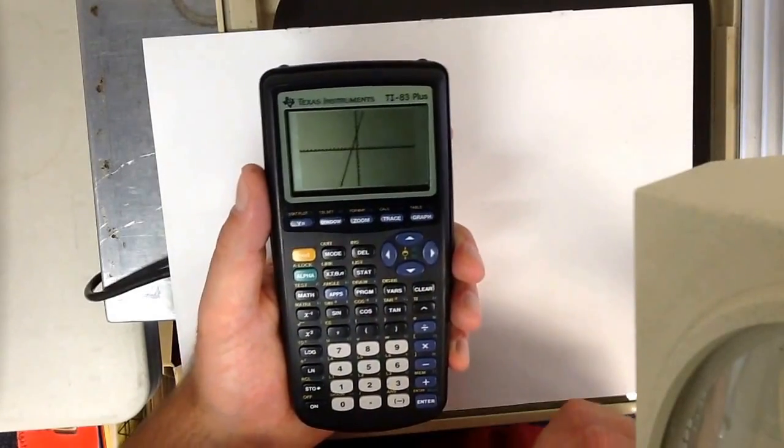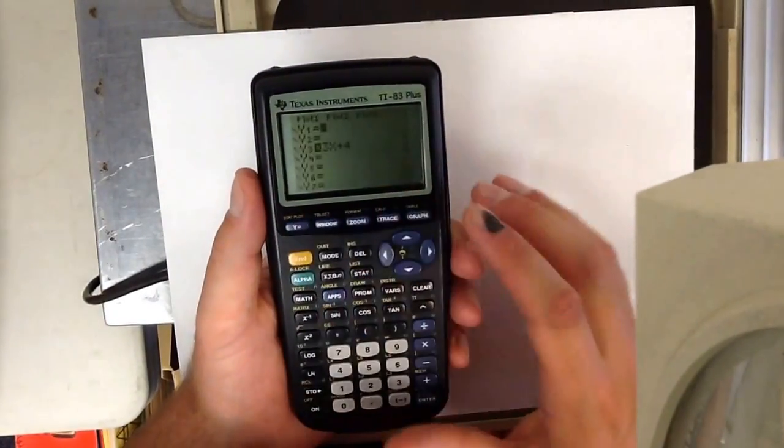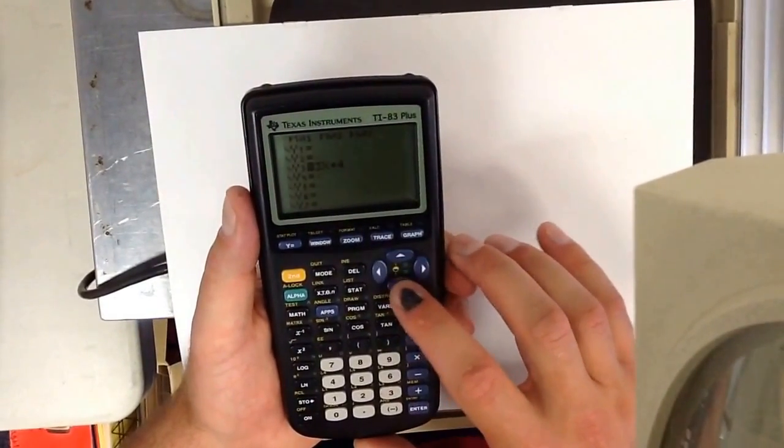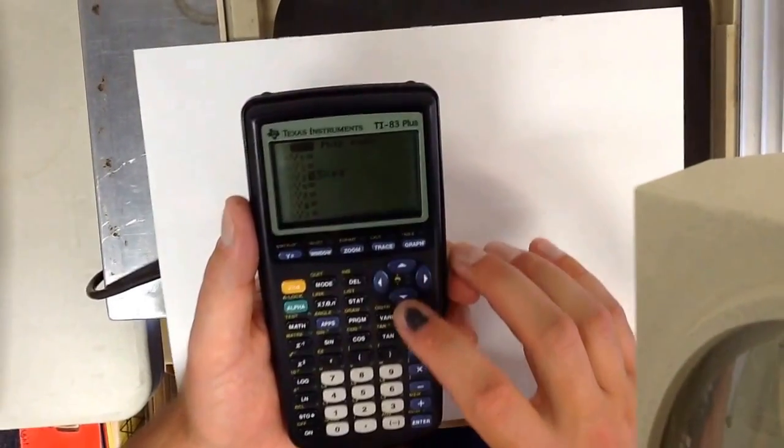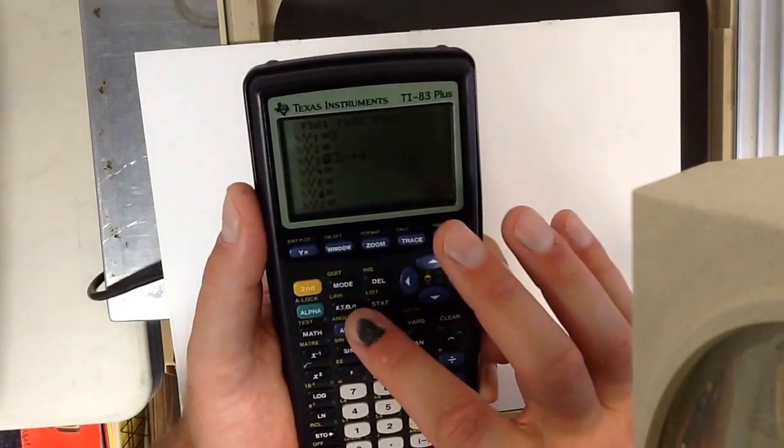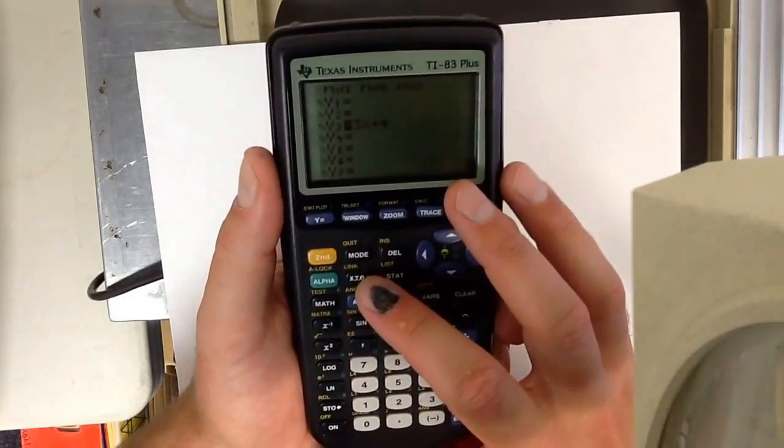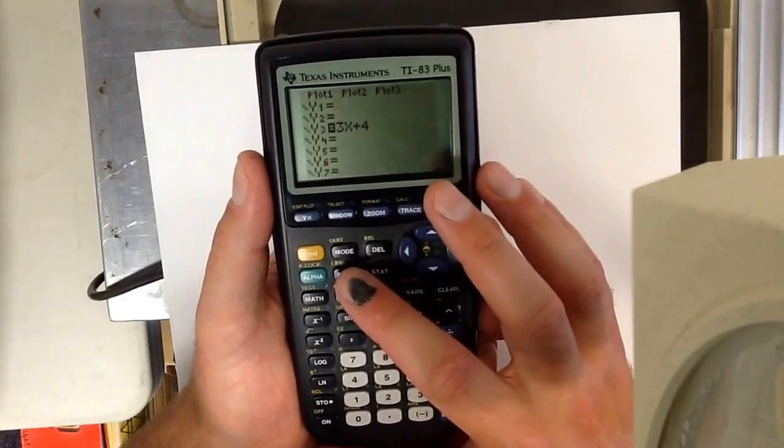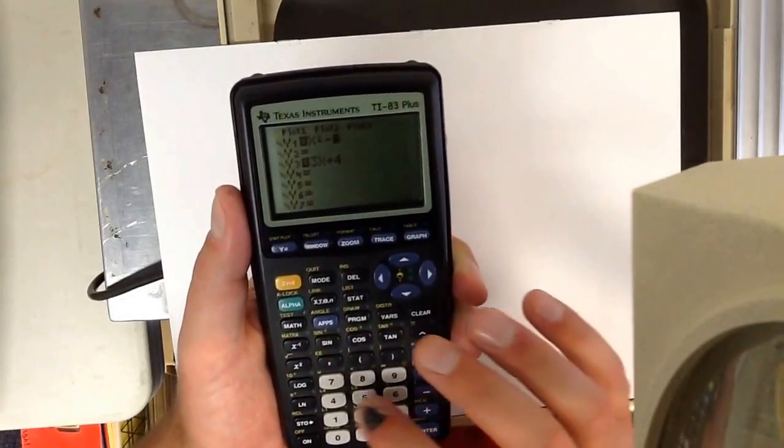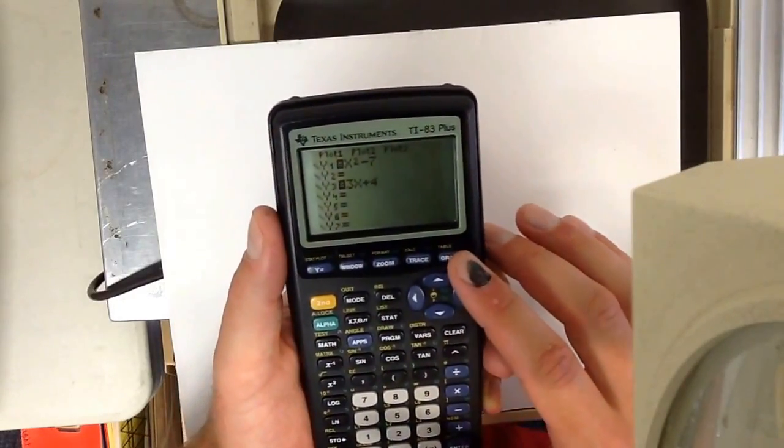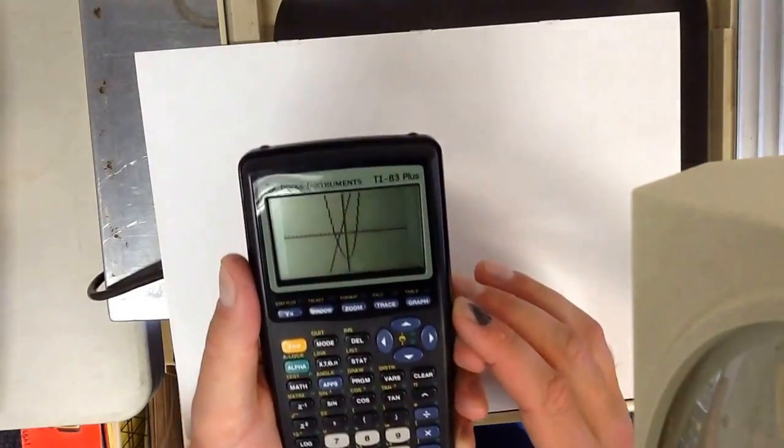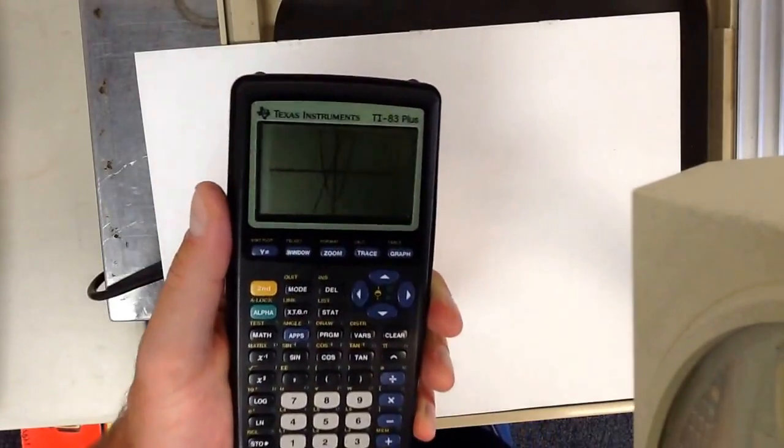I can graph more than one line at a time. Go back to y equals button and in another spot, it doesn't matter which one. You can go down the list as far as you wanted. I'll go y2. Let's graph a parabola, how about x squared minus 7. Now in order to get the squared function I press x and then I press this button here. It says x squared minus 7. Then I press the graph button and it'll populate my graph with that new graph.